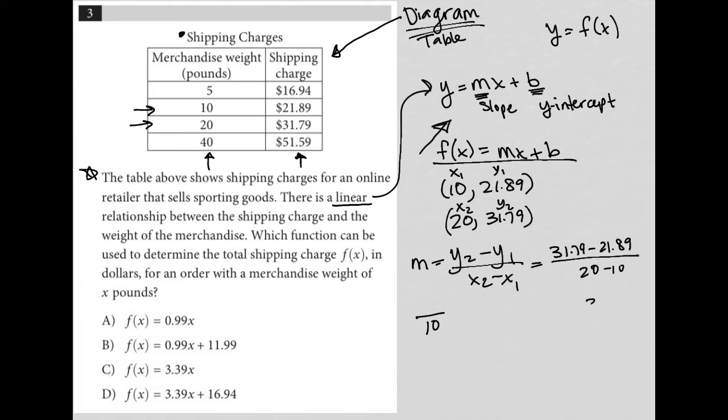The numerator is 9.9. It's 31.79. So we can't use a calculator here. So let me just show the math instead of doing it in my head. Minus 21.89. So that's zero, borrow, seven, that's nine, borrow, and that's nine. So $9.90 divided by 10 is just going to be 0.99.